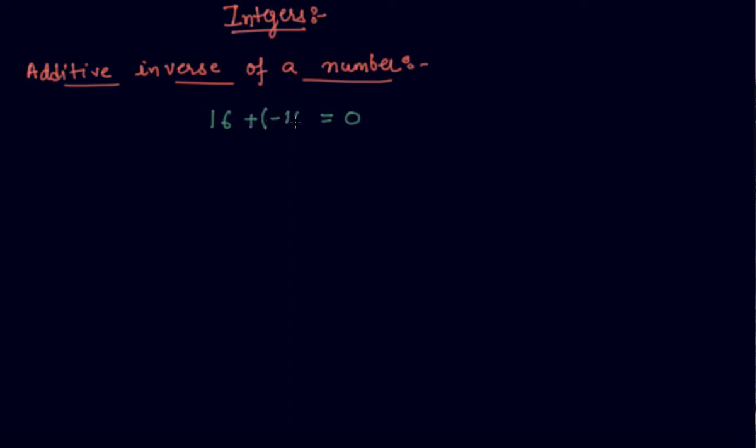If I add -16 to 15, the sum will become 0. So -15 is an additive inverse of 15. So if you're asked in an exam to find the additive inverse of -76, let's say, what will you do?